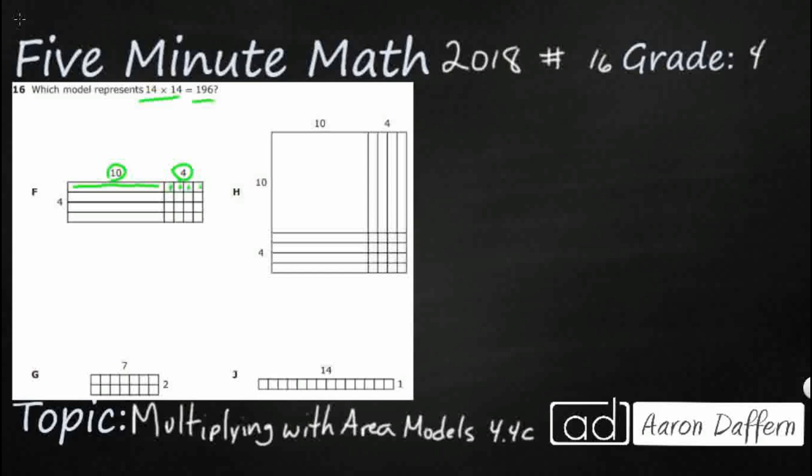So this 10 and 4, what that 10 and 4 is, you can actually add those up. So what we get right there on F is a 10 plus 4. And then it multiplies it by this 4 over here. So you've got four rows of this 10 plus 4.